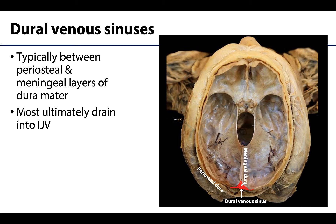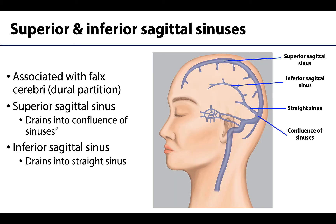Most venous sinuses will eventually drain into the internal jugular vein, or IJV, which is formed by the coalescence of the inferior petrosal sinus with the sigmoid sinus. Let's talk about some of the specific dural venous sinuses, starting with the two associated with the falx cerebri — one of those dural partitions located within the longitudinal cerebral fissure.